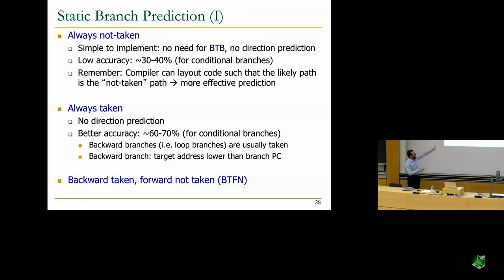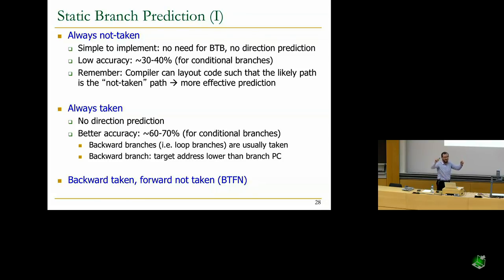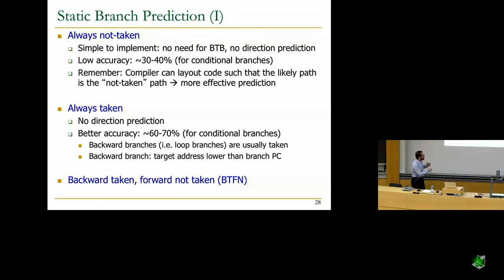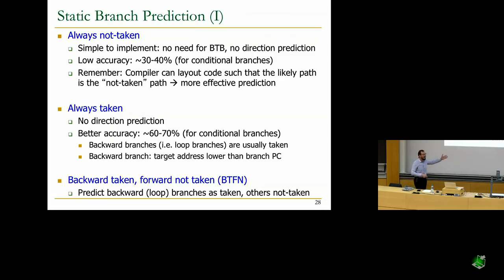A more sophisticated static mechanism: backward-taken, forward-not-taken. If the branch target is lower than the PC — a backward, loop branch — predict taken. If the branch goes forward, predict not taken. This heuristic says loops are caused by backward branches and loops usually iterate. It turns out this has higher accuracy because of exactly that reasoning.